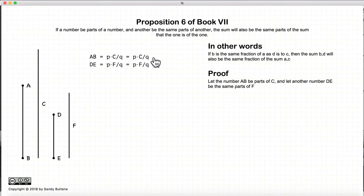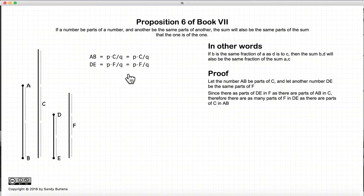So let's prove this. So we are going to start off with two numbers, ab and de, and ab is going to be equal to a number of parts of c, and de is going to be equal to the same number of parts of f. So basically we're saying that ab is p over q of c, and de is p over q of f.